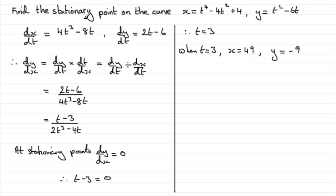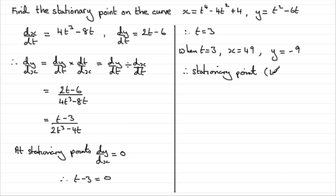We've essentially answered the question as it just said find the stationary point. But it would be quite good to extend this to determining the nature — whether it's a maximum or a minimum. So we have the stationary point at (49, -9), and to determine the nature we can use a gradient method.